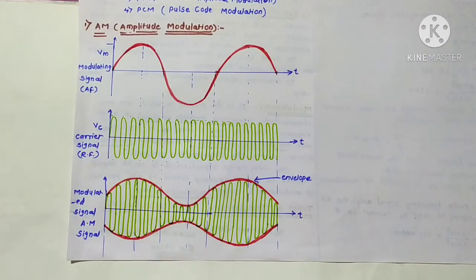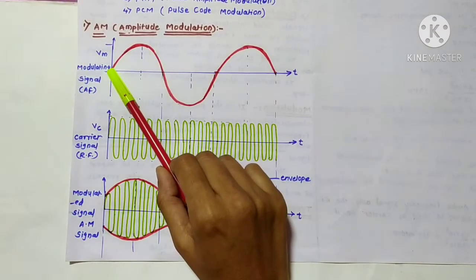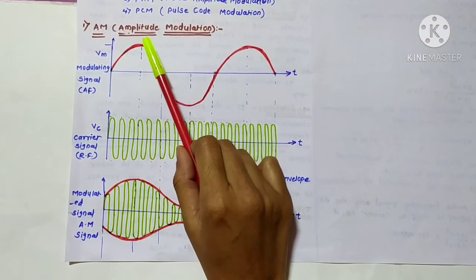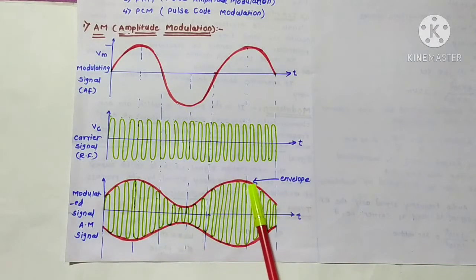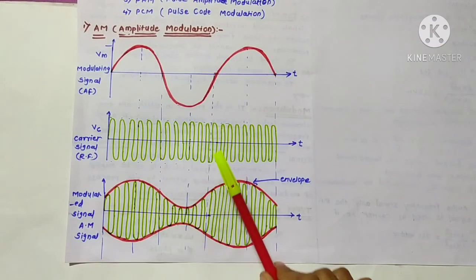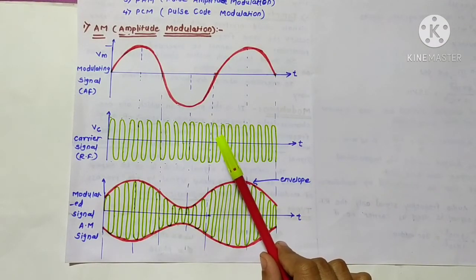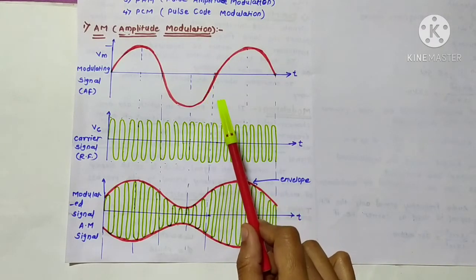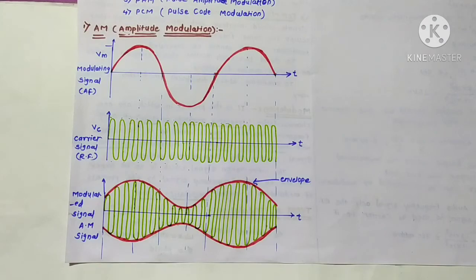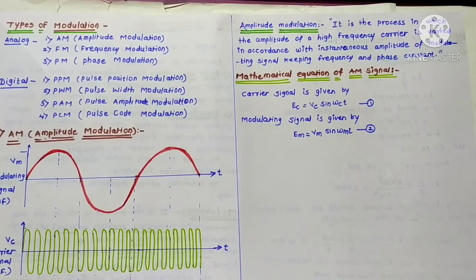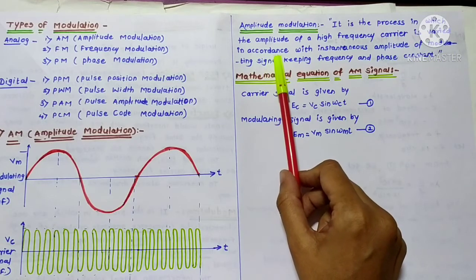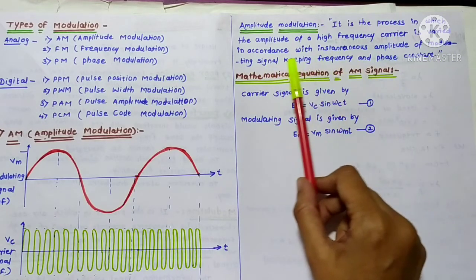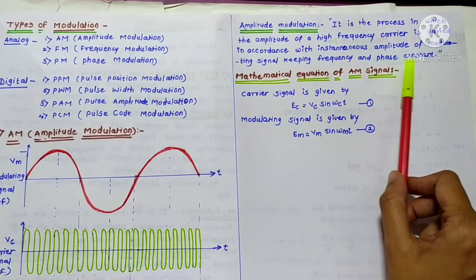As the modulating signal starts varying, the carrier amplitude starts varying accordingly. From 0 to positive peak, and positive peak back to origin, you can see the amplitude change for the positive peak. For the negative peak, there is also a change, and this variation alternates. Note that the radio signal is not a regular sine wave as shown — this representation is only for understanding purposes.